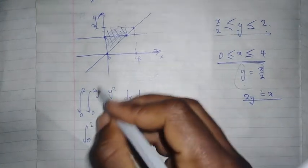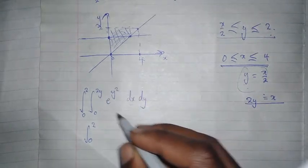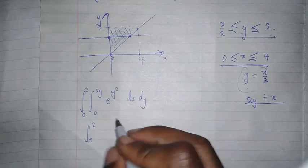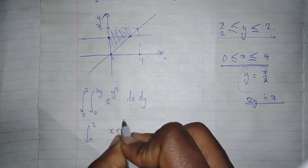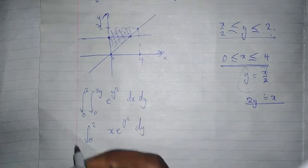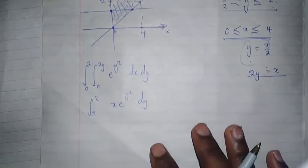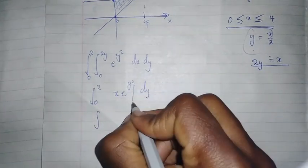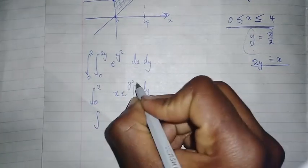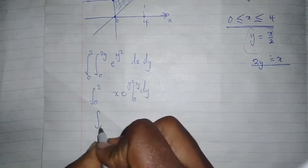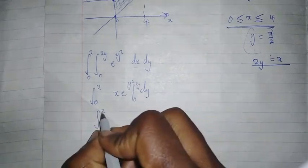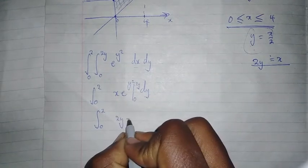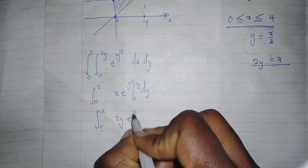My inner integration is with respect to x, so that's 0 to 2y. Since e to the power y squared is a constant with respect to x, I get x e to the y squared. So it's 0 to 2, then I'll make use of the limits. That's 2y e to the power y squared minus 0.